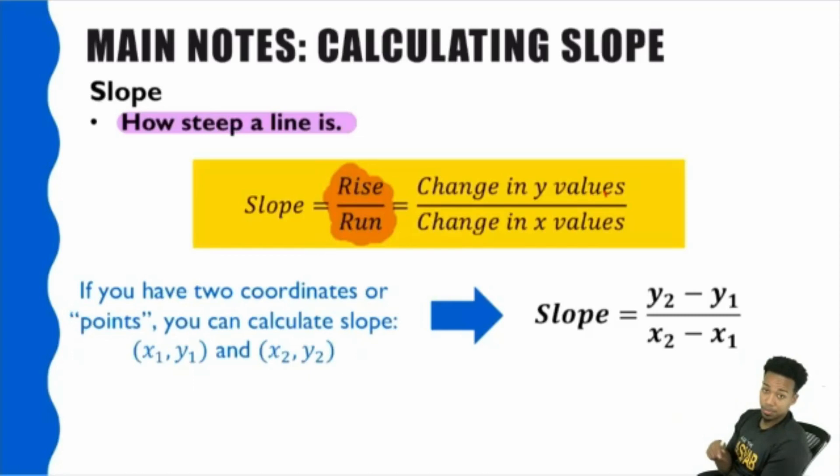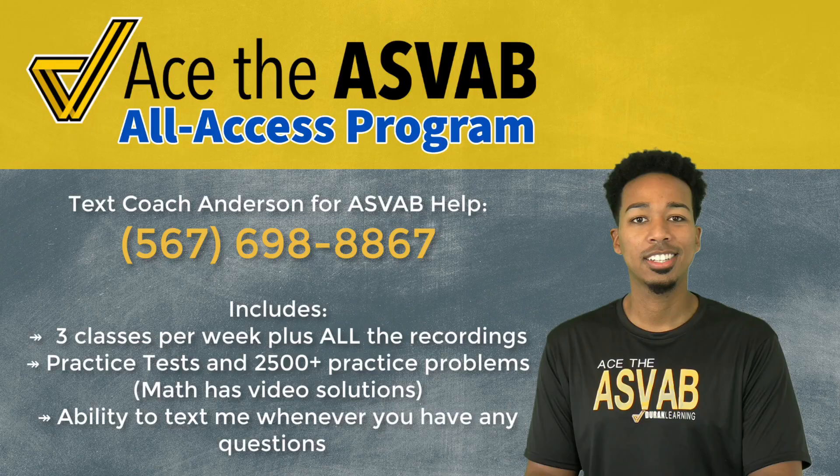Slope is rise over run. What that really means is this — when you look at a coordinate grid, something like this...